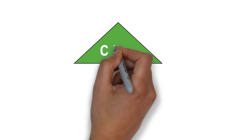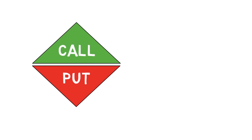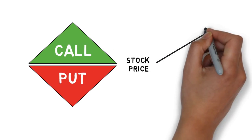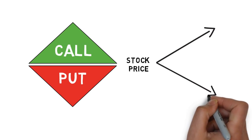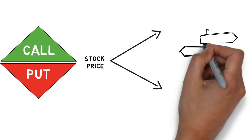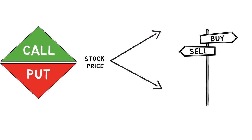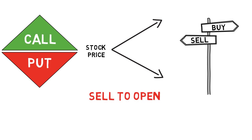There are two types of options: calls and puts. If you buy a call, you want the stock to go up. If you buy a put, you want the stock to go down. Since there are two sides to every market, you can also do the opposite, where you would sell the option as an opening trade and hopefully buy it back at a lower price as a closing trade.